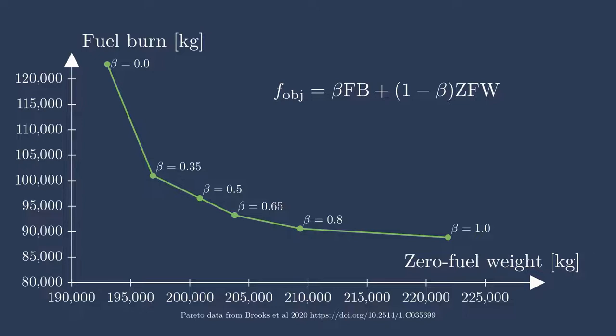Here they are looking to minimize both the fuel burn and the zero fuel weight, and they did this by performing six different optimization problems. These six different optimization problems were scaled differently by using different beta scalar values. This constructs a Pareto front by connecting the dots between them.